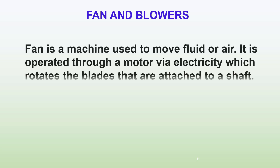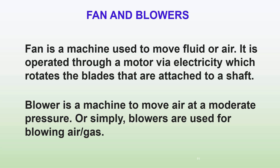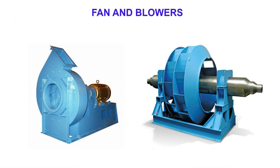Fan and blower. A fan is a machine used to move fluid or air, operated through a motor via electricity, which rotates blades attached to a shaft. A blower is a machine to move air at a moderate pressure, or simply, blowers are used for blowing air and gas. Here are example pictures of fans and blowers.